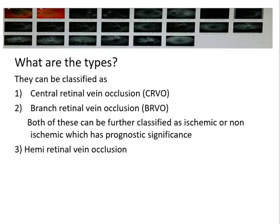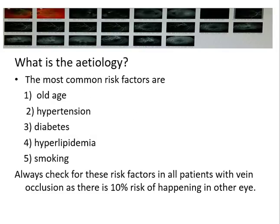Ischemic means the circulation is very poor and these patients are at risk of developing complications. The most common risk factors for vein occlusion are elderly patients who are diabetic, hypertensive, have hyperlipidemia, or are smokers. It is very important to check for hypertension, diabetes, and hyperlipidemia in all patients with vein occlusion, as there is a 10% risk of this happening in the other eye.